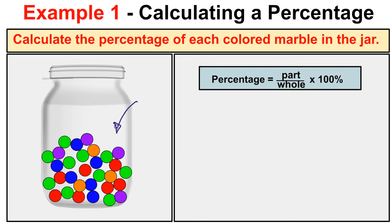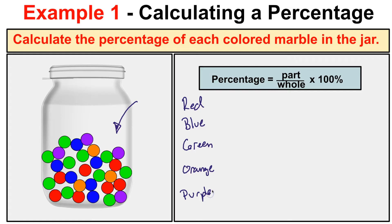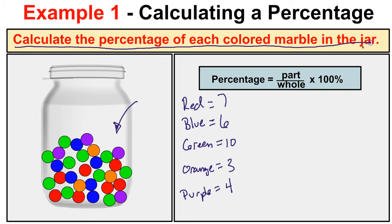Let's take a look at this example right here where we have a jar of marbles. If we take a look at this jar, we have several different colored marbles: red, blue, green, orange, and last but not least, purple. If we count these marbles up, we will see that there are seven red ones, six blue ones, ten green ones, three orange ones, and four purple marbles. What we want to do is calculate the percentage of each colored marble in the jar.